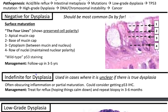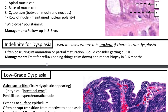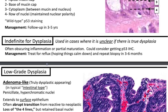The management for negative for dysplasia in a background of intestinal metaplasia is follow-up in three to five years. Indefinite for dysplasia is used when it is unclear if there is true dysplasia — contexts include inflammation or partial maturation. You could consider getting a p53 stain. Management is to treat for reflux, hoping things calm down so you can better determine whether changes are due to inflammation or true dysplasia, and repeat biopsy in three to six months.